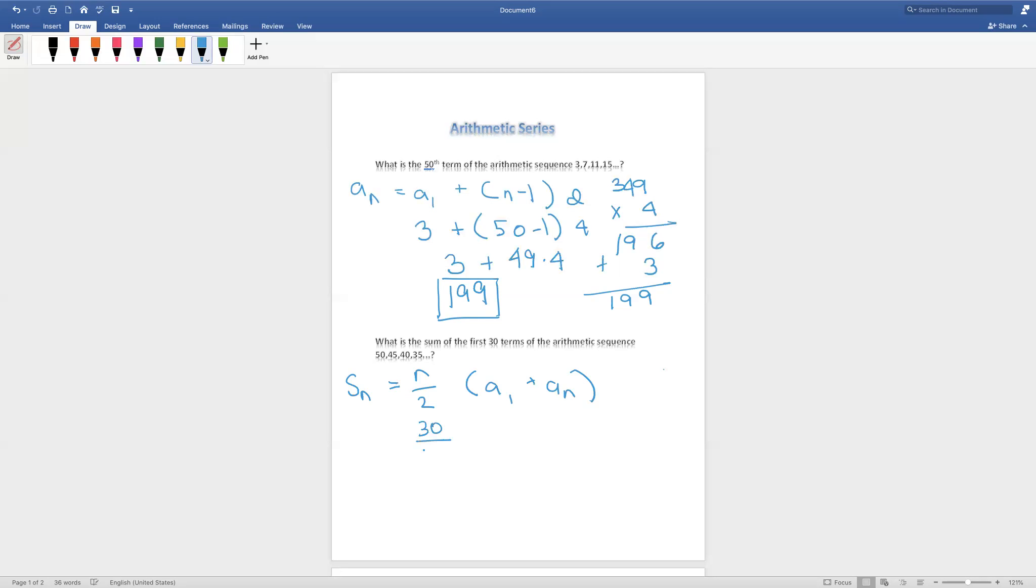There are 30 terms divided by 2, 50 is our first term, plus an, which we're not sure of yet. Remember our last formula to find out what is the nth term? We're going to be applying it here too. For this question, we need to apply both these formulas. After we find out what an is, we can find out the sum. So, let's find out what an stands for. Let's apply this formula.